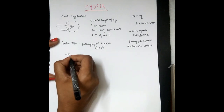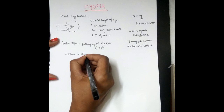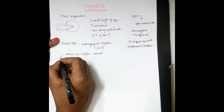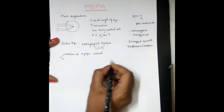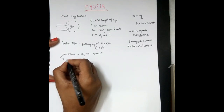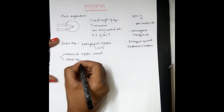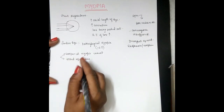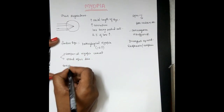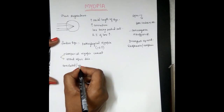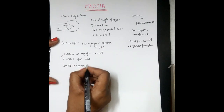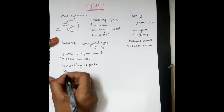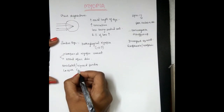The first fundus sign is temporal myopic crescent, and another is tilted optic disc. Remember two things about the optic disc: temporal myopic crescent and tilted optic disc. Coming to the fundus itself, it will be tessellated or tigroid fundus, and this fundus will have lacquer cracks.